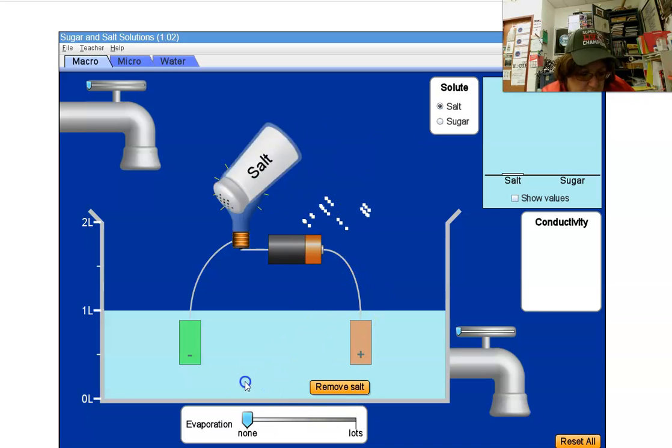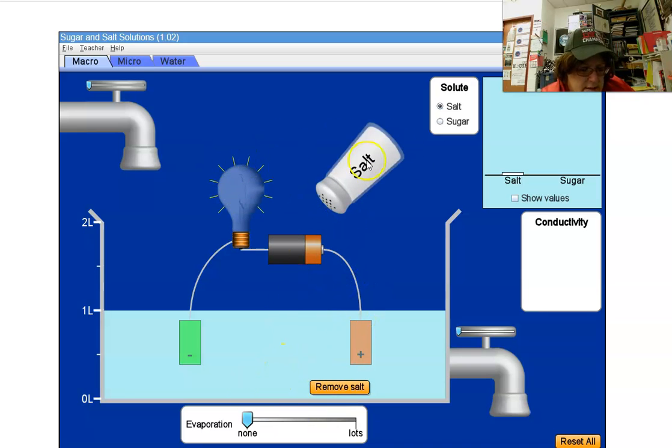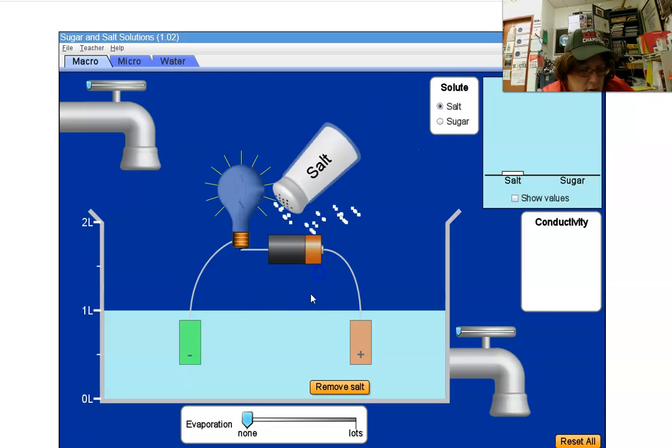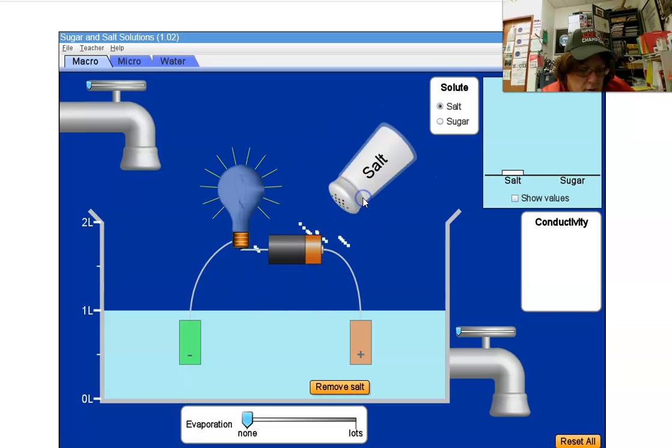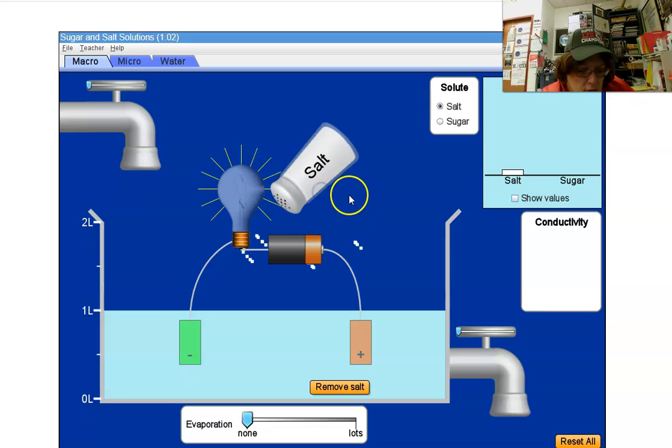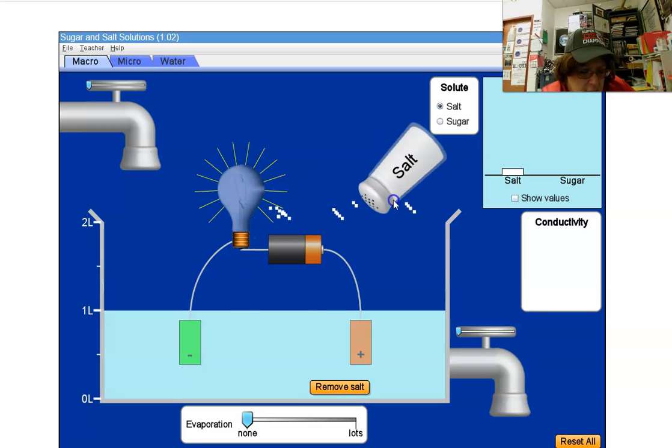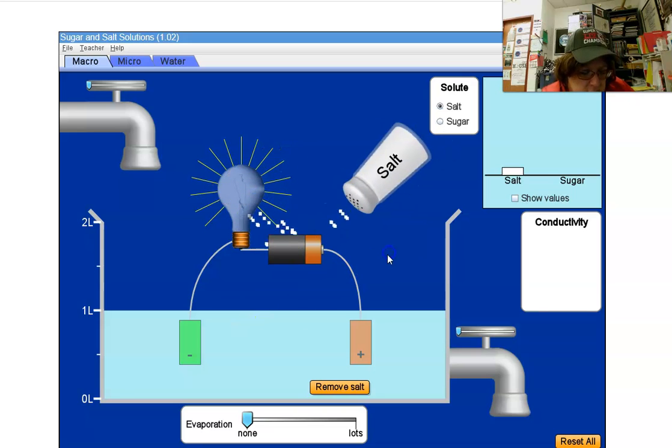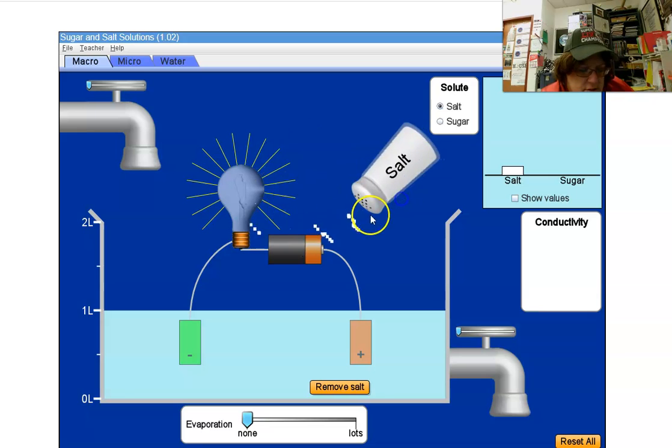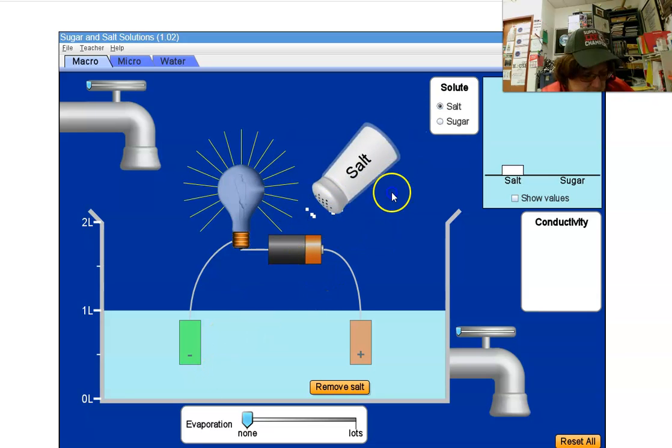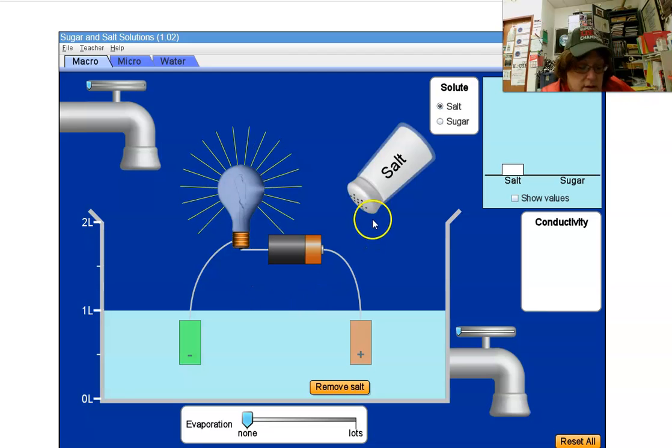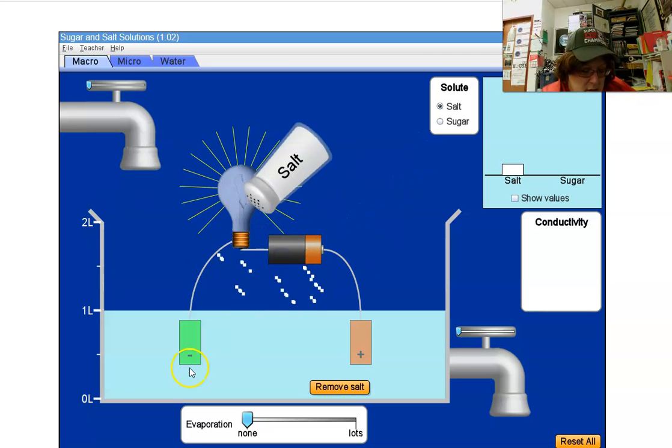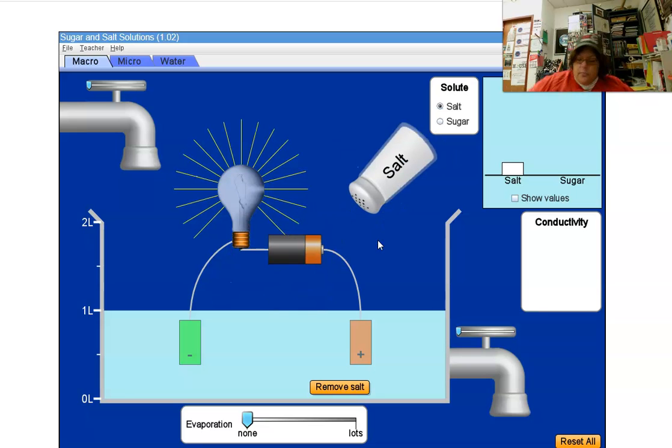So put some more in. And it's getting a little brighter. You notice the more salt we add, the brighter it gets. So salt, in this case, I'm assuming it's sodium chloride, but it could be anything. That tells us two things.